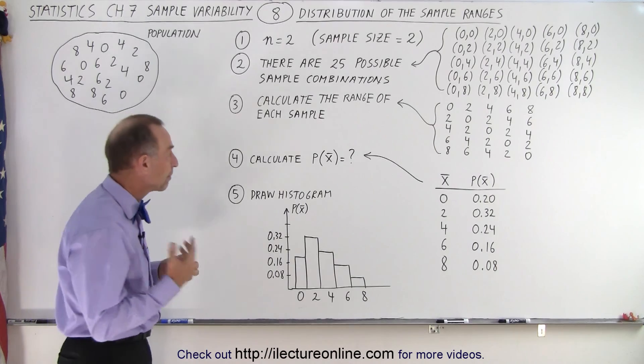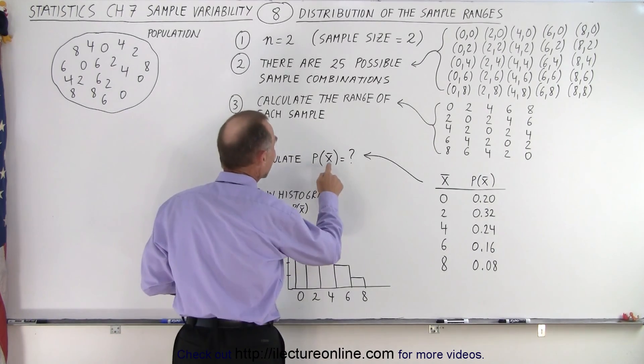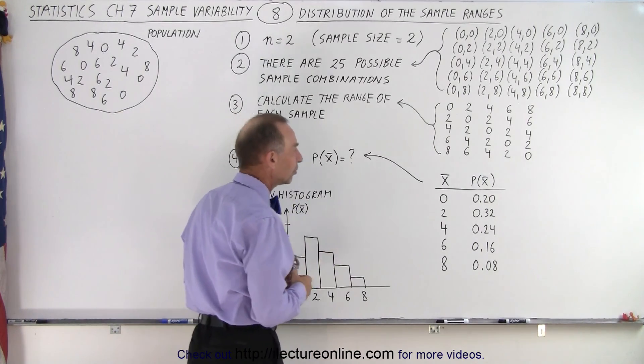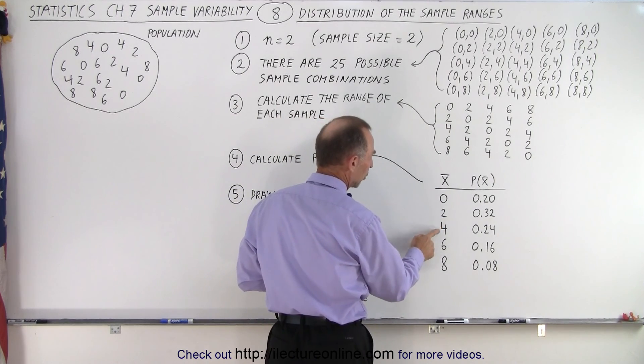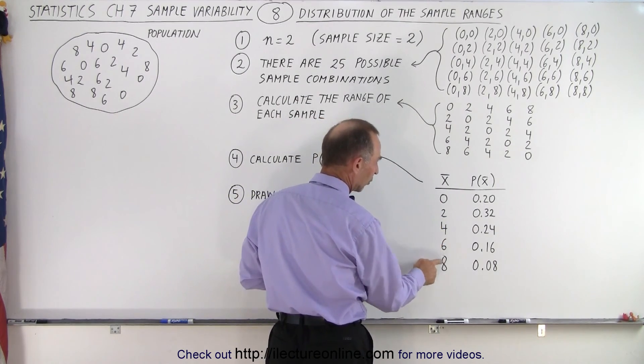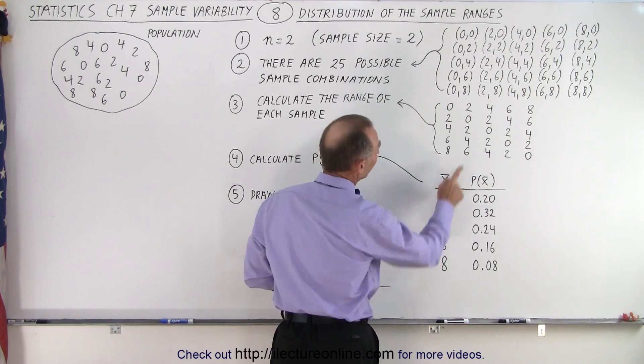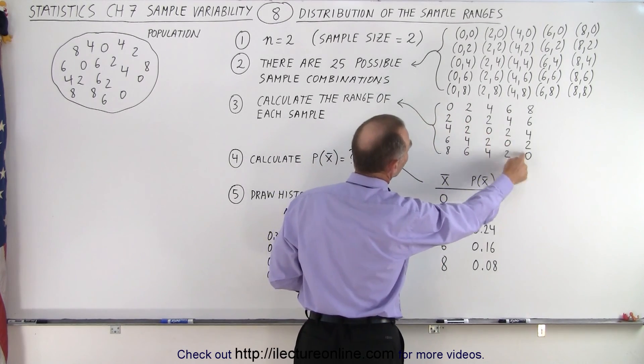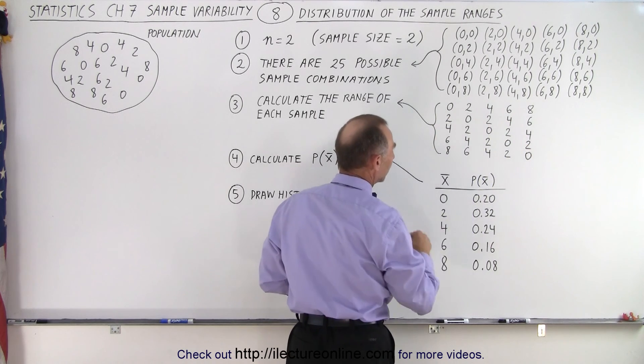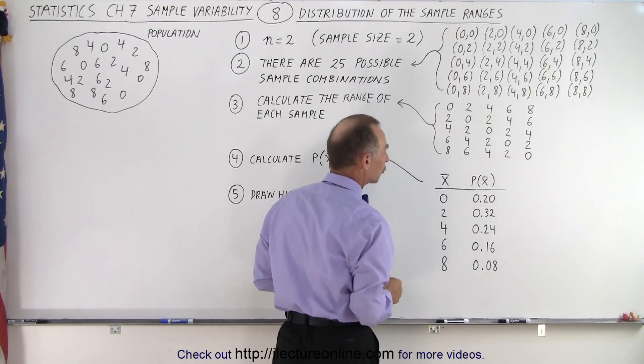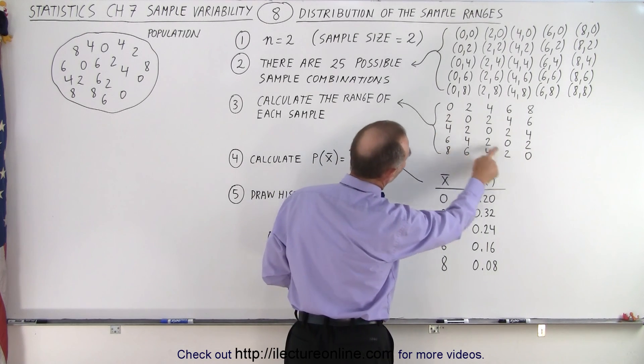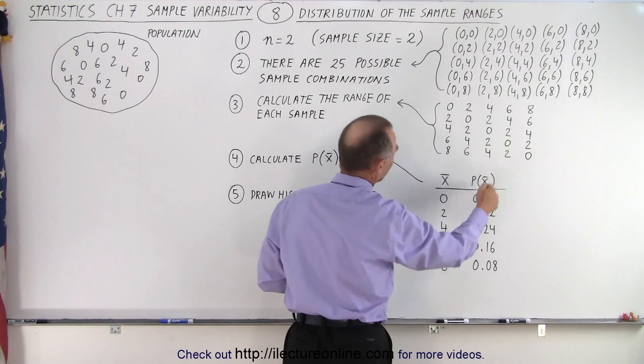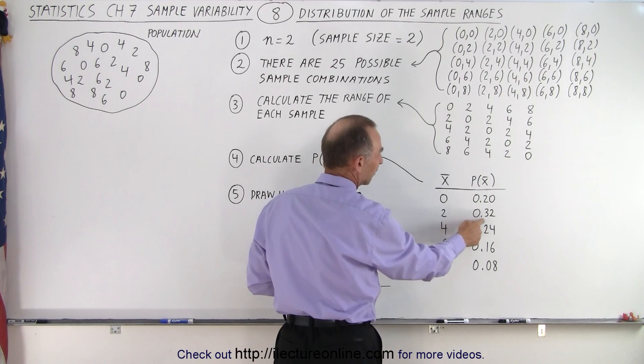So then we calculate the probability of getting each of the ranges. Notice we can have a range of 0, a range of 2, a range of 4, a range of 6, or a range of 8. Since the range of 0 appears 5 times and there's 25 combinations, 5 out of 25 is 0.2. For the range of 2, notice there is 4 plus 4 is 8 different combinations. 8 divided by 25 is 0.32.